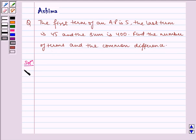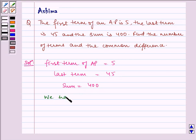Let us write the solution. Given to us is: first term of AP is equal to 5, last term is equal to 45, sum is equal to 400. We have to find N and D.